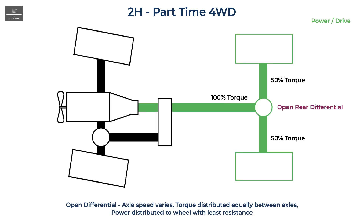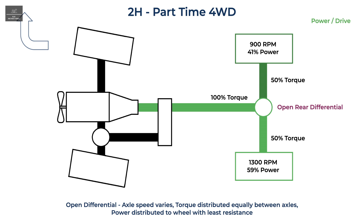When a vehicle is turning to the right, the outer wheel spins faster than the inside wheel. For illustration purposes, let's say the outer rear wheel rotates at 1300 RPM and the inside rear wheel at 900 RPM. The power split is then 59 percent to the outer wheel and 41 percent to the inner wheel. However, the torque split remains the same on each axle at 50/50 percent.